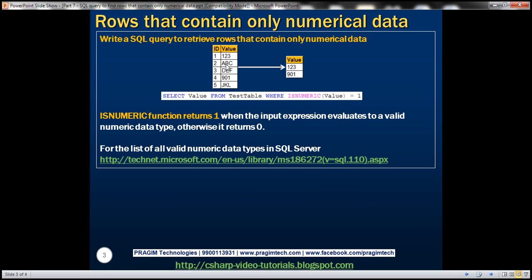Notice this table has got a value column. The data type of this value column is nvarchar, meaning you can store any type of data within that column. If you look at the first and fourth rows, it has got numeric data. In the second, third, and fifth rows we have got alphabetical data.